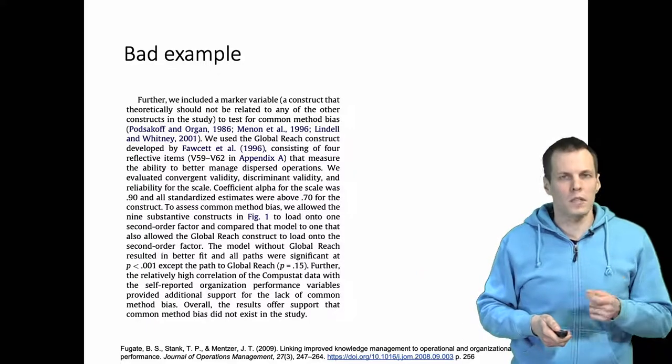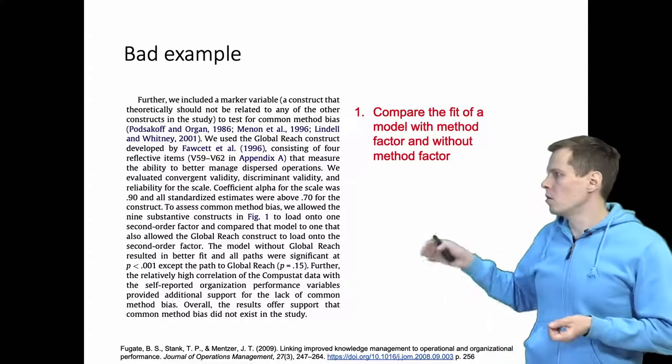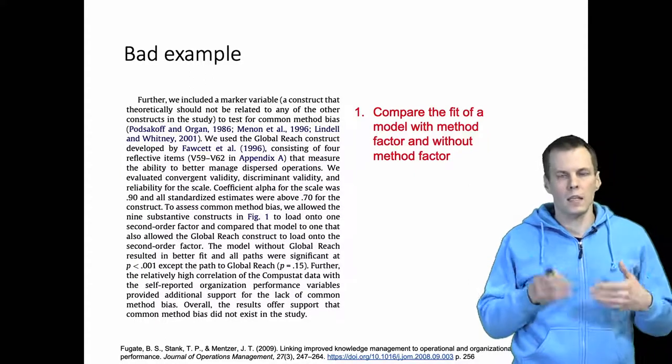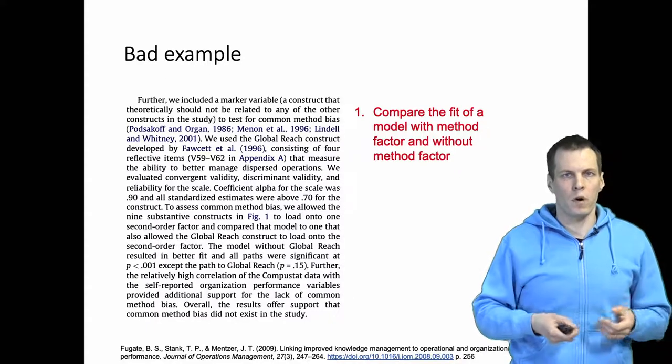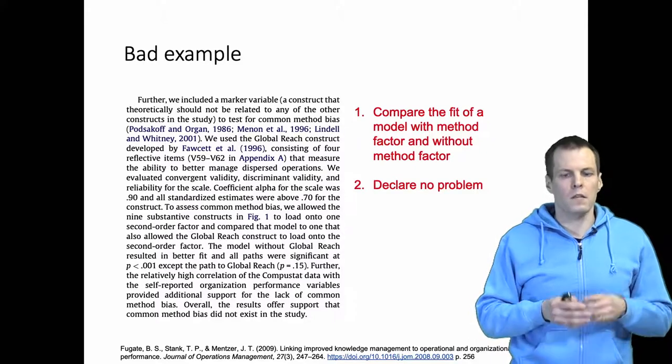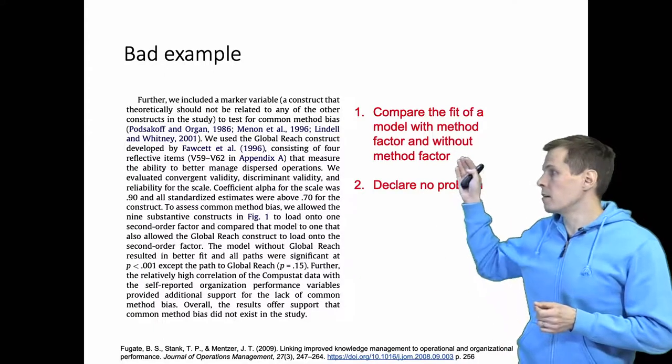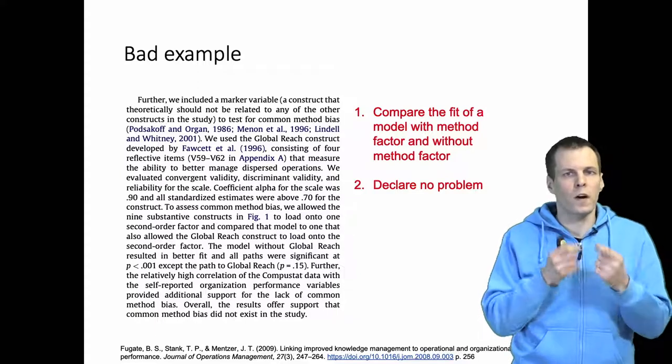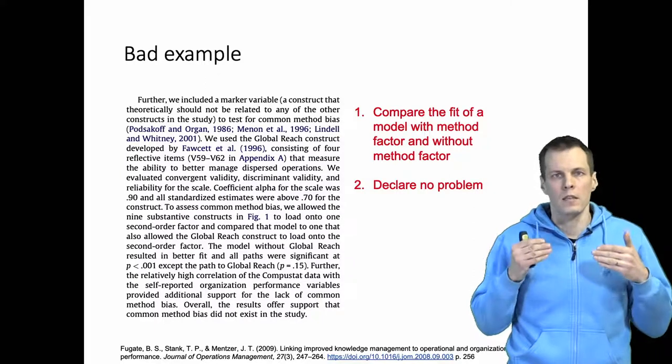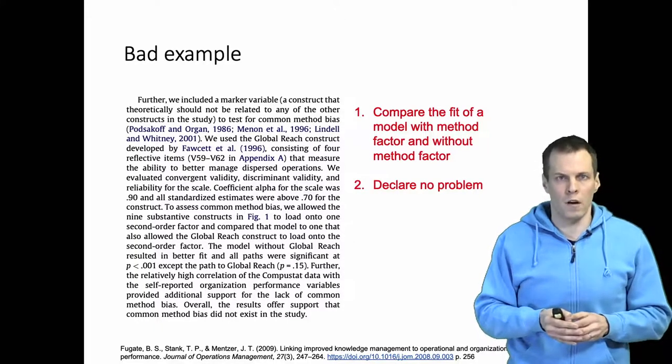The common strategy which is suboptimal is to do a two-step process. First you compare the fit of the model with and without the method factor, then you notice that adding the method factor to the model does not improve model fit and then you conclude that there's no problem. This is insufficient for a couple of reasons. It is insufficient because if they are not identified, not finding a significant difference is because you don't have enough power. It is possible that there actually is a method effect but your sample size is too small to detect it. This relates to empirical under-identification as well.